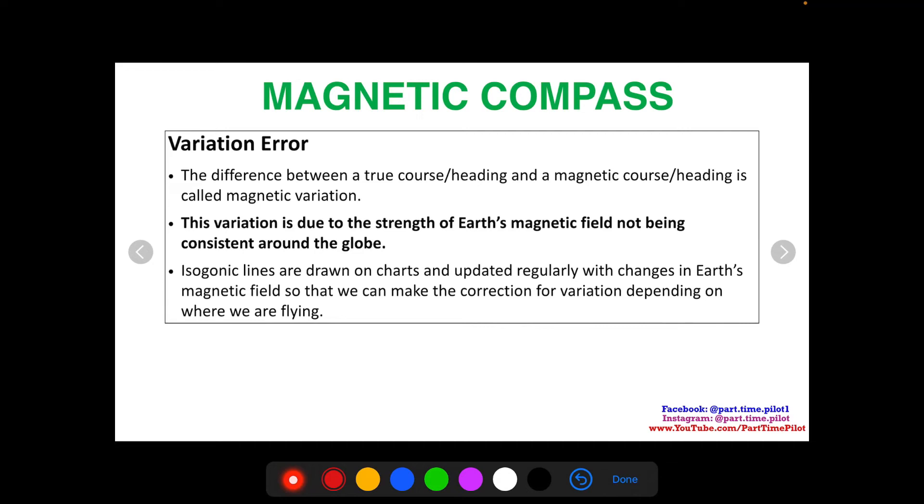Isogonic lines are drawn on charts and updated regularly with changes in Earth's magnetic field so that we can make the correction for variation depending on where we are flying.